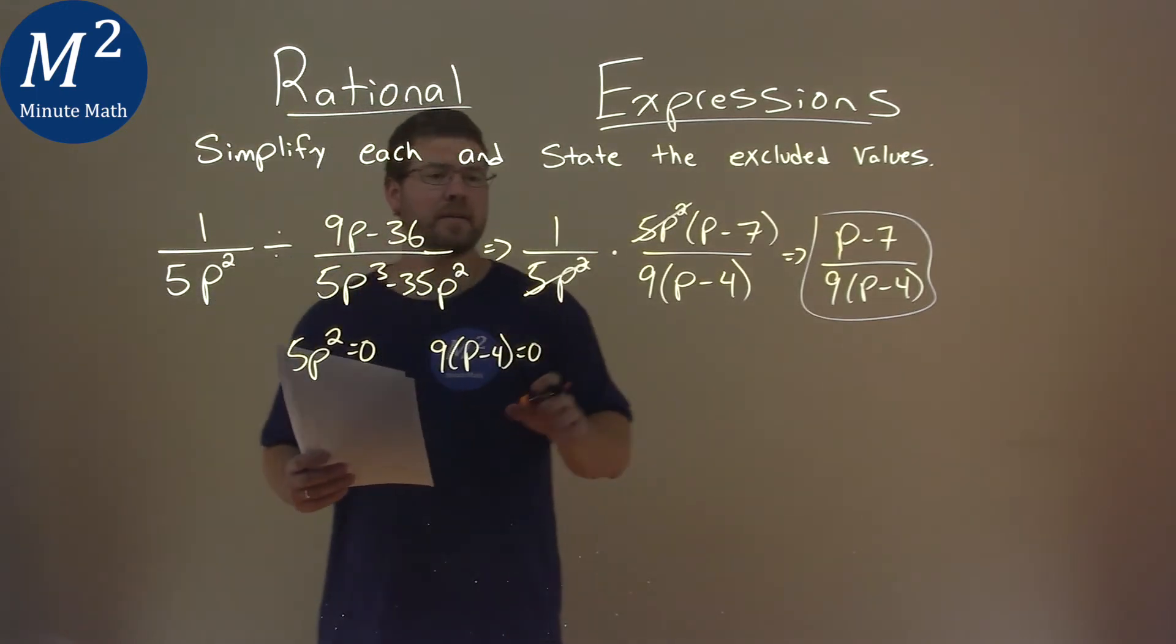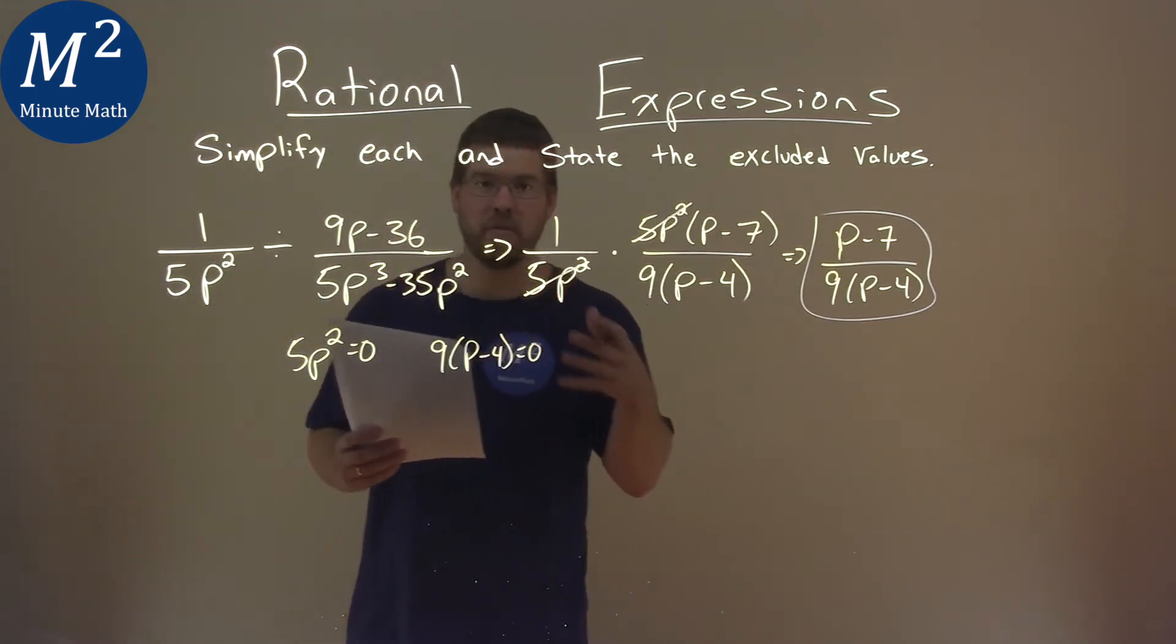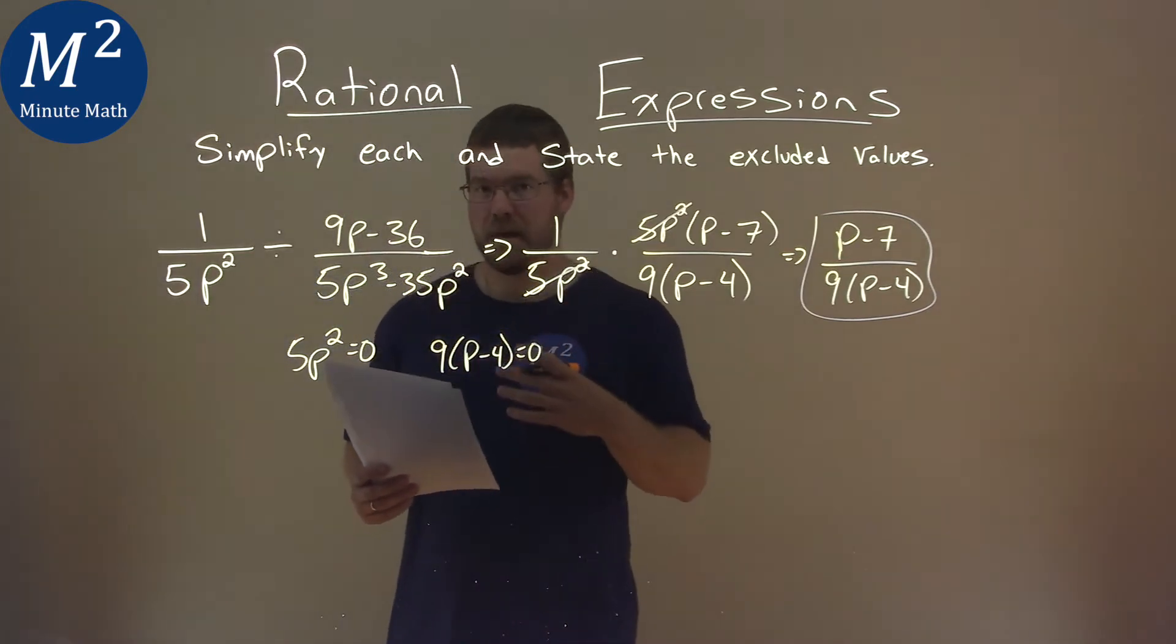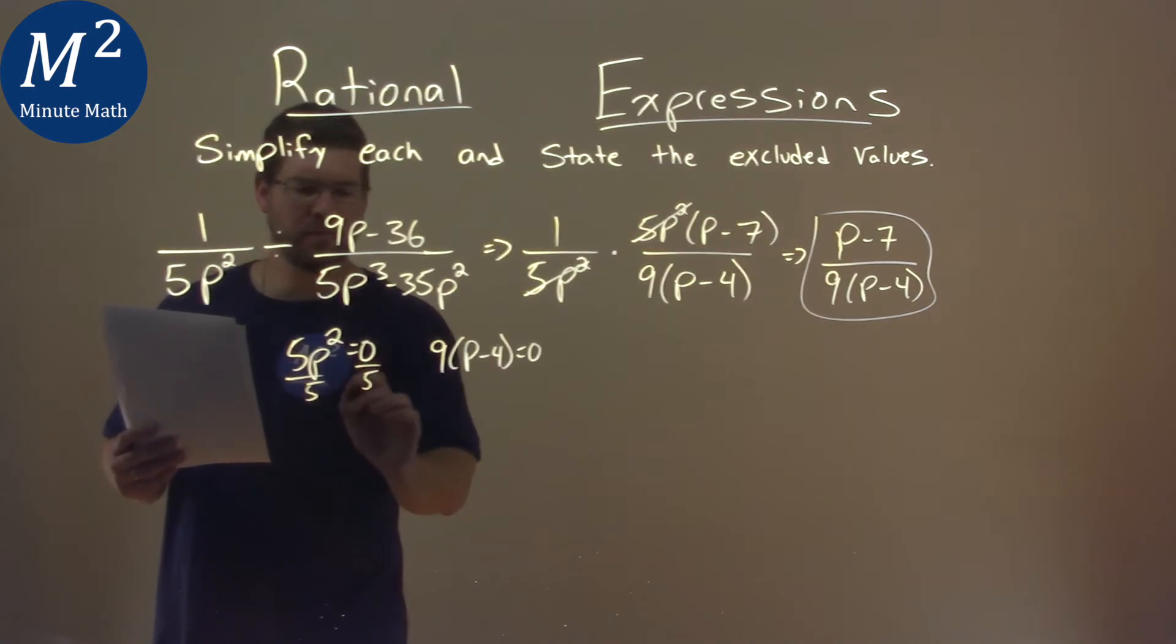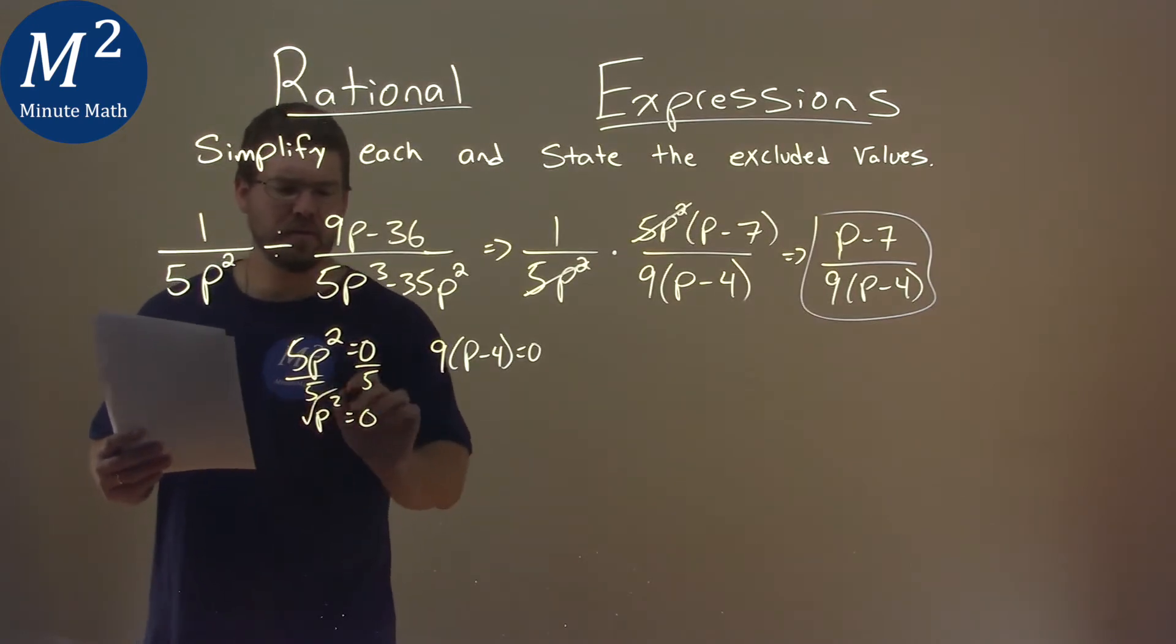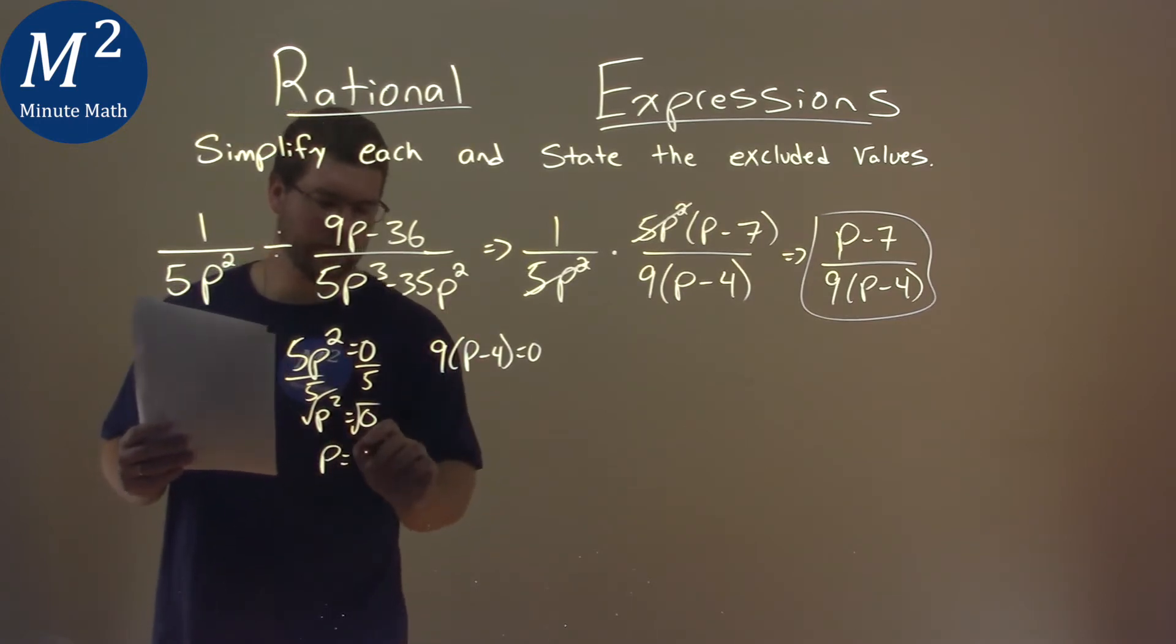And the whole point, again, is we cannot divide by 0, so we have to find the p values that cause that to happen. Well, here, a little easy, we divide both sides by 5, we get p squared equals 0, 0 divided by 5, square root both sides, and again, p just equals plus or minus 0, but just 0.